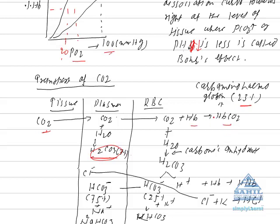RBCs also contain water, so CO2 combines with water in RBCs to form carbonic acid. But this is an enzymatic reaction, catalyzed by the enzyme carbonic anhydrase, which is one of the fastest known enzymes with a turnover number of 36 million. In the presence of this enzyme, carbonic acid is formed rapidly.